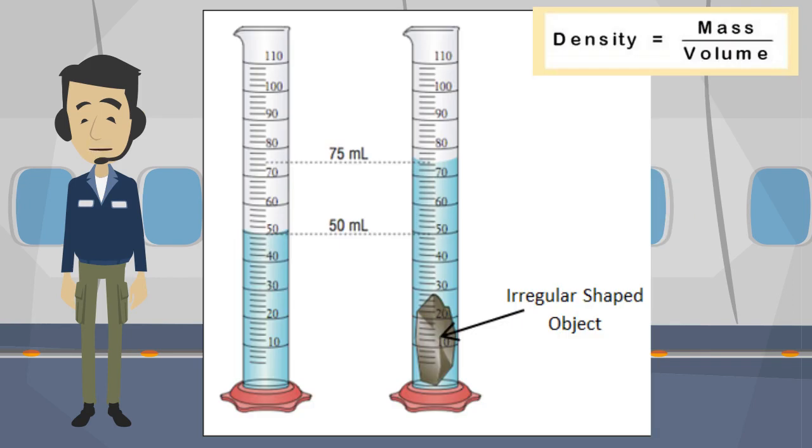One way is to place the item in a graduated cylinder or beaker with water in it. Just note the water level before and afterwards. The difference is the volume of the object as marked on the scale.